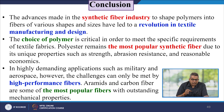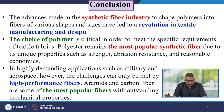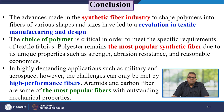The advances made in the synthetic fibre industry to shape polymers into fibres of various shapes and sizes have led to a revolution in textile manufacturing and design. The choice of polymer is critical to meet specific requirements of textile fabrics. Polyester remains the most popular synthetic fibre due to its unique properties such as strength, abrasion resistance, and reasonable economics. In highly demanding applications such as military and aerospace, the challenges can only be met by high performance fibres — aramid and carbon fibre — which are among the most popular fibres with outstanding mechanical properties. In this segment, we discussed the application of polymers in textile, various kinds of fibres, their uses, and basic chemistry.